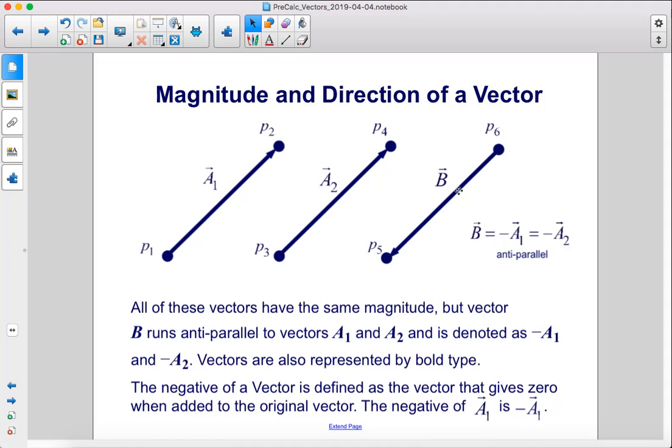Here you can see that B's arrow points this way, whereas A1 and A2 have arrows that point the opposite way.